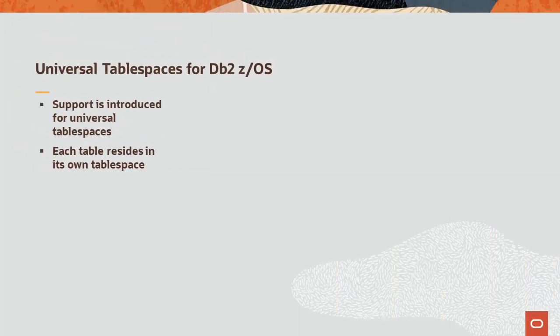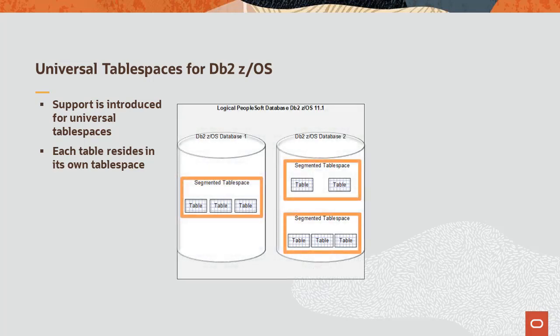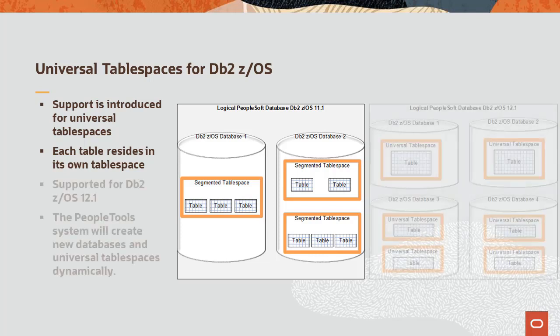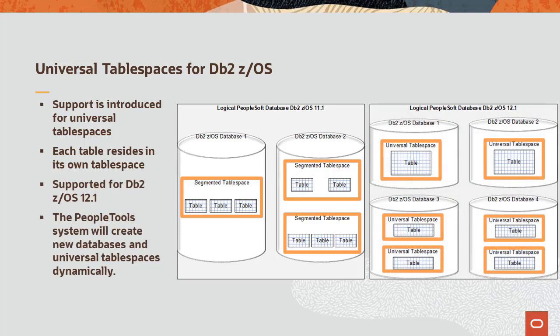Oracle is aligning with IBM's Strategic Direction on the DB2 for ZEOS platform by introducing support for Universal Tablespaces. Prior to PeopleTools 8.5.8, PeopleTools used IBM's Shared Segmented Tablespaces, which allowed for multiple tables in a tablespace. IBM's direction has shifted to adopt Universal Tablespaces, which contain a single table. Beginning with PeopleTools 8.5.8, PeopleTools will dynamically create new databases using UTS with DB2 ZEOS 12.1 when Function Level 503 or higher is enabled.